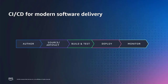Before starting with the demo, I also want to quickly talk about the CI/CD process. We have different stages in our CI/CD process. We start off with authoring the code where we actually write our code. And there are many steps you can take to ensure that your code is written in a way that will benefit the pipeline, from security to better readability and things like that.